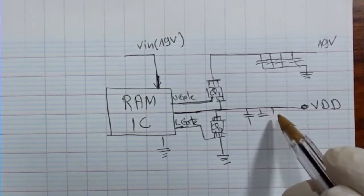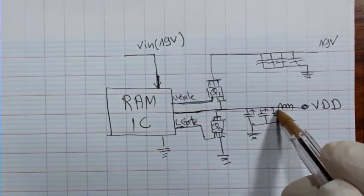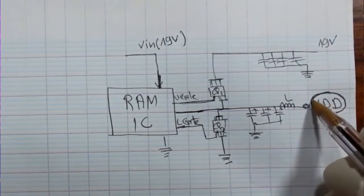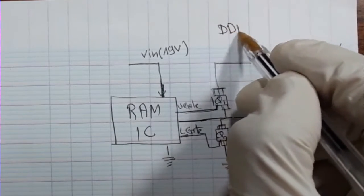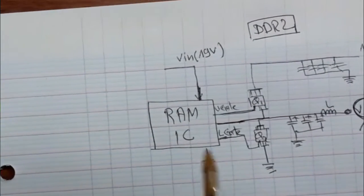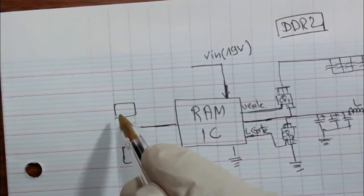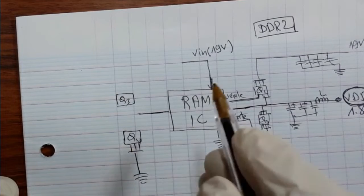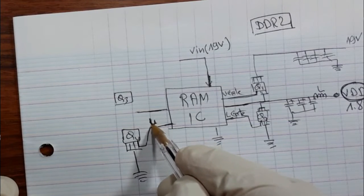On this side we will get the VDD. Of course here we have chemical capacitors and a coil. So this is the chemical capacitor and this is the coil. On this side of the IC we will get the VDD — for DDR2, for example, we will get 1.8 volt. On the other side we have another MOSFET pair: Q3 and Q4, with source connected to ground. This is the lower gate 2.